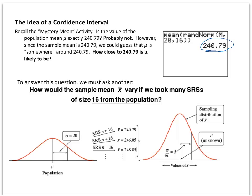So the question is, how close is 240.79 to the mean likely to be? To answer this question, how would the sample mean x̄ vary if we took many simple random samples of size 16 from the population? We would get a lot of different answers. As we saw in class, everybody did this and got a little bit different answer because you all got a different random sample.